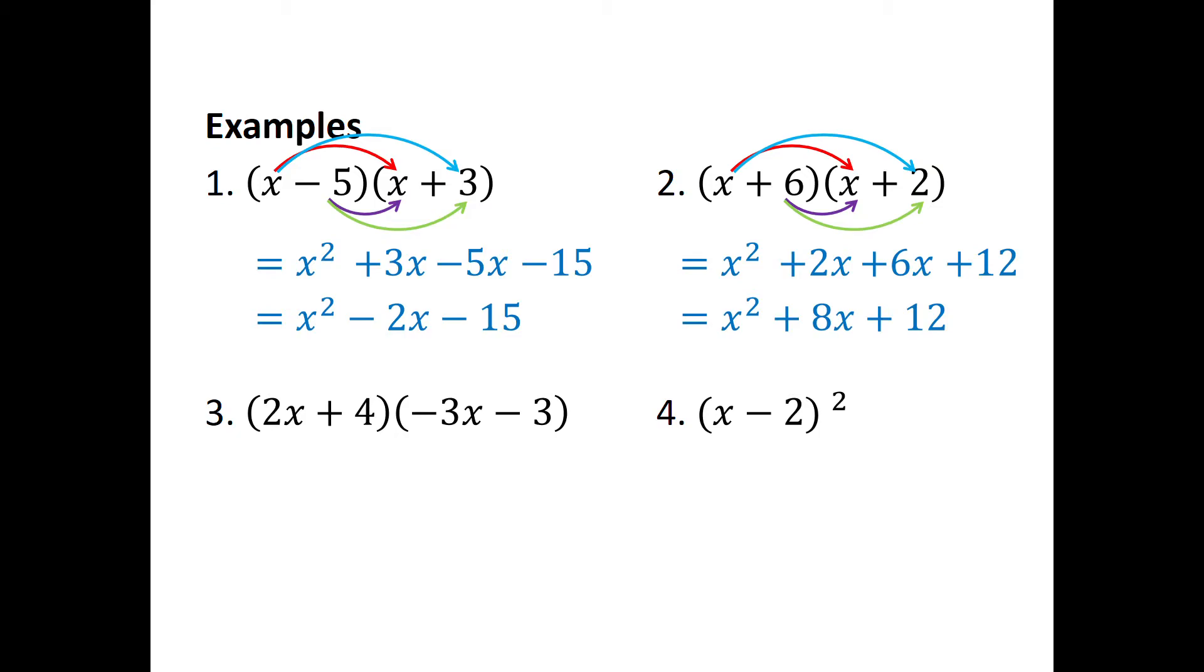Try number 3 by yourself. Don't go on to number 4 yet. So number 3 again, I'm going to do firsts and then outers. If I do that, you should have got something that looks like this. Then I'm going to do the inside terms. So 4 times negative 3x and 4 times negative 3. And that's what I will get. And then I simplify my like terms. So negative 6 minus 12 gives me minus 18.